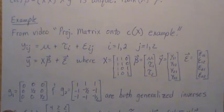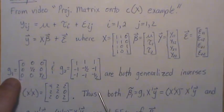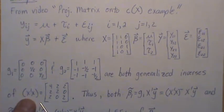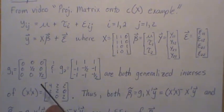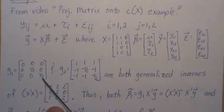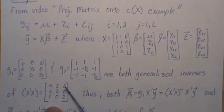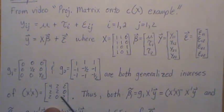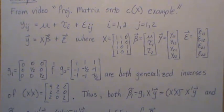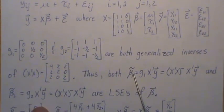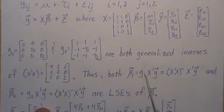In this example, we showed that both g1 and g2 are generalized inverses for x transpose x. And what that means is if you take this times this matrix, times this matrix, you get it back. And the same way for this one, if we take this times this times this, you get this one back. So these are both, and we confirmed it in the previous video, are generalized inverses of x transpose x.